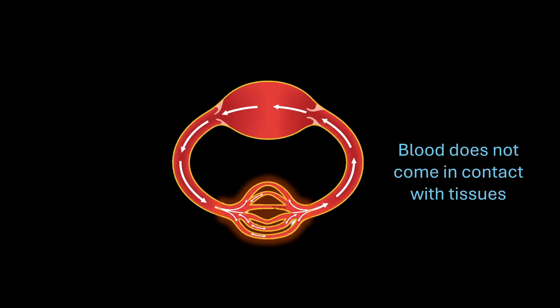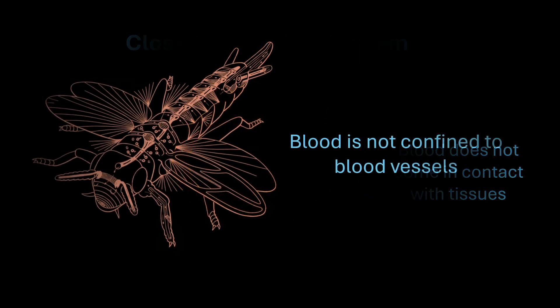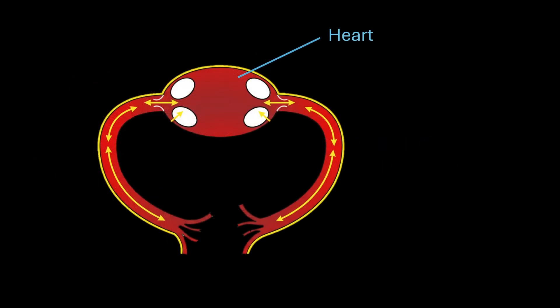The heart and the blood vessels form a continuous network which do not allow the blood to come in contact with the tissues. Therefore, such a system is called a closed circulatory system. But cockroaches are different.